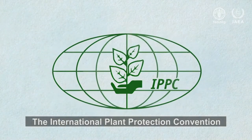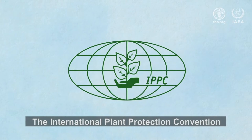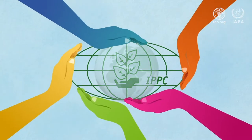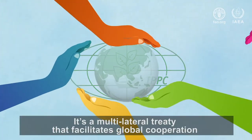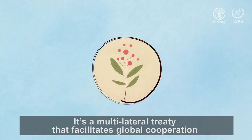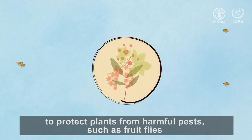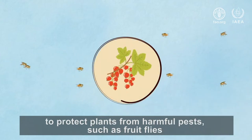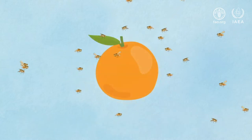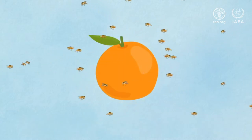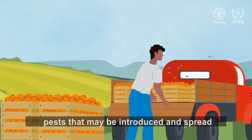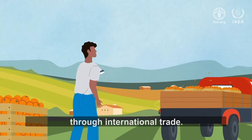The International Plant Protection Convention, IPPC, is a multilateral treaty that facilitates global cooperation to protect plants from harmful pests, such as fruit flies — pests that may be introduced and spread through international trade.